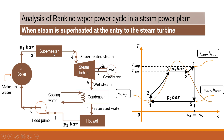In the superheater, the heat of flue gases is utilized to further heat the dry saturated steam so it becomes superheated steam. That superheated steam at point 4 is expanded in the steam turbine, producing mechanical work. The turbine shaft is coupled with a generator shaft to convert mechanical work into electrical energy. During expansion, the superheated steam gets converted to wet steam.